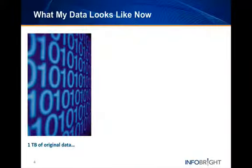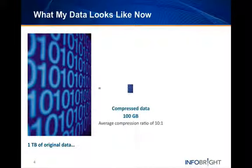Data packs are compressed at an average ratio of 10 to 1, so starting with 1TB of raw data for example, the compressed data will be about 100GB, and the associated Knowledge Grid will be about 1GB.